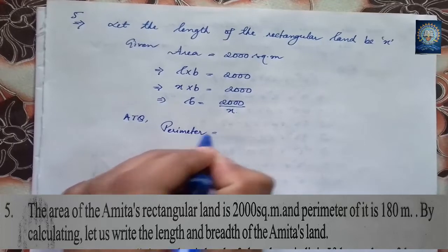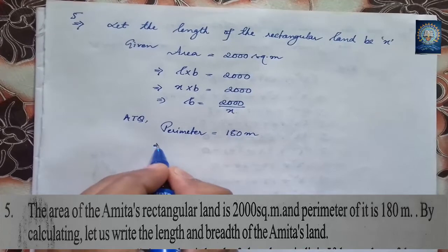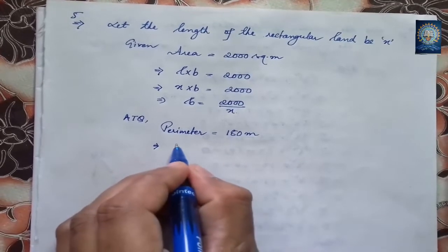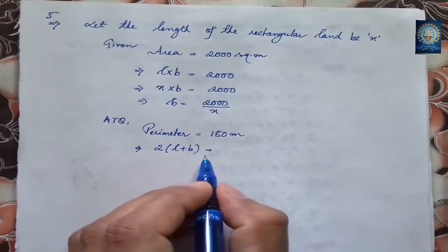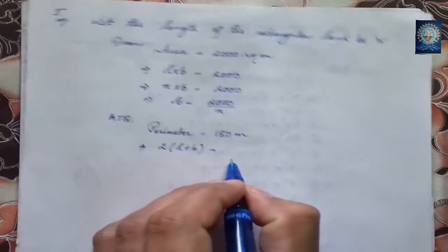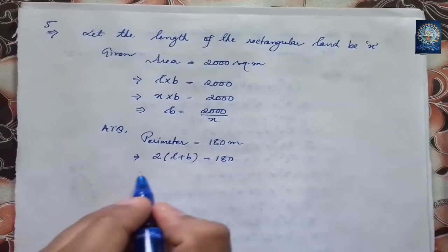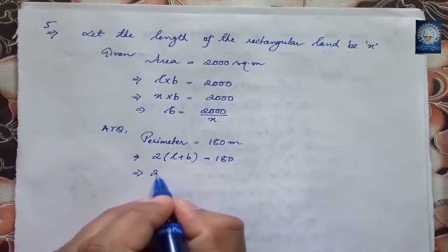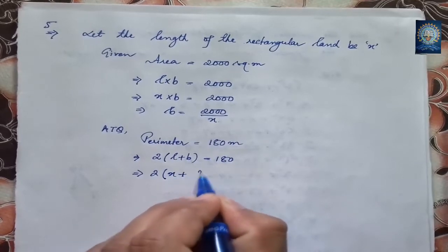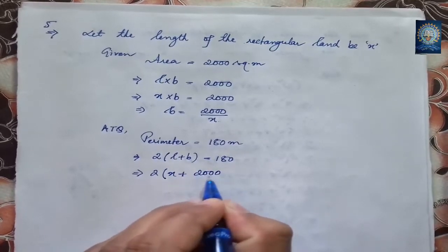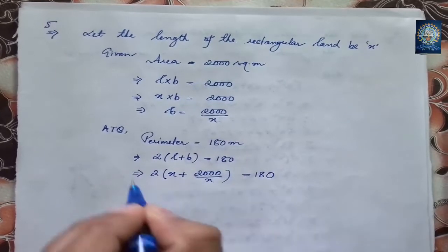Now using the second condition from the question — perimeter is 180 meters. We know the formula: 2 times (length + breadth) is equal to 180. So length is x and breadth is 2,000 by x, giving us 2(x + 2000/x) = 180.